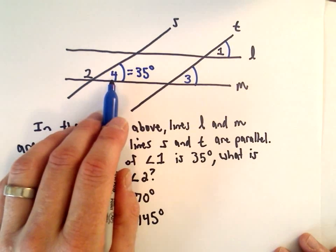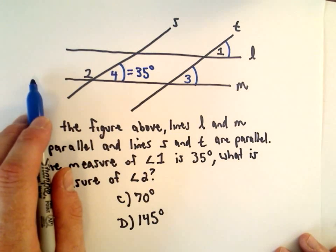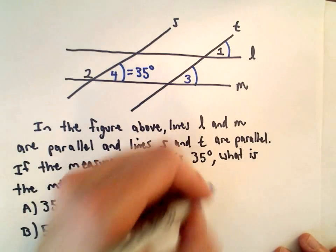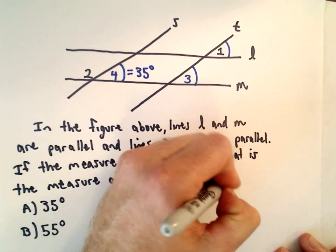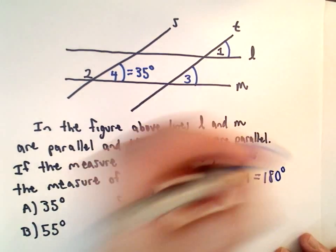Since angle 2 and angle 4 lie along a line, we know that their measures have to add up to 180 degrees. So the measure of angle 2 plus the measure of angle 4, that has to equal 180 degrees.